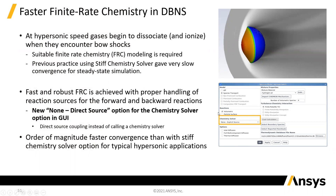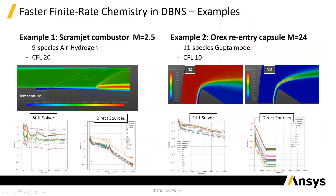You can use an option for explicit sources now, and this can be orders of magnitude faster to converge. There's an example here of a scramjet, and also an example of a re-entry vehicle, and you can see how much faster these residuals are dropping off with the direct sources and how much better they're converging.